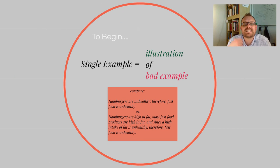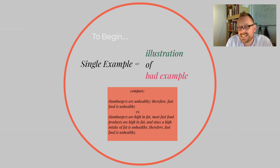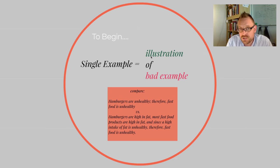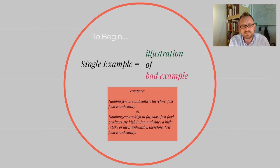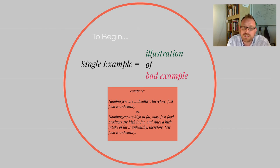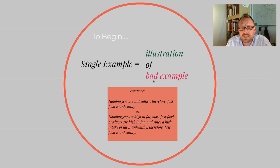To begin, when we've given a single example of something, that example can function as an illustration. You don't need more than one example if you're giving an illustration. This is important: recognize the difference between making an argument and providing an illustration to make sense of your explanation. A generalization that only uses a single example is really a bad generalization.